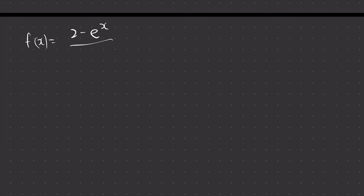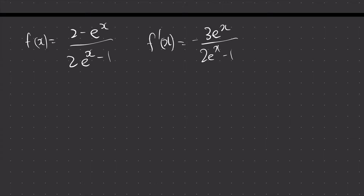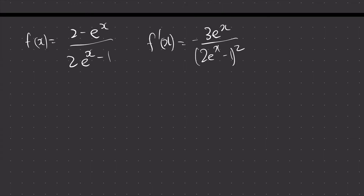So let's say we have f(x) equals (2 minus e to the power of x) over (2e to the power of x minus 1), and we want to show that f prime of x equals negative 3e to the power of x over (2e to the power of x minus 1) squared.